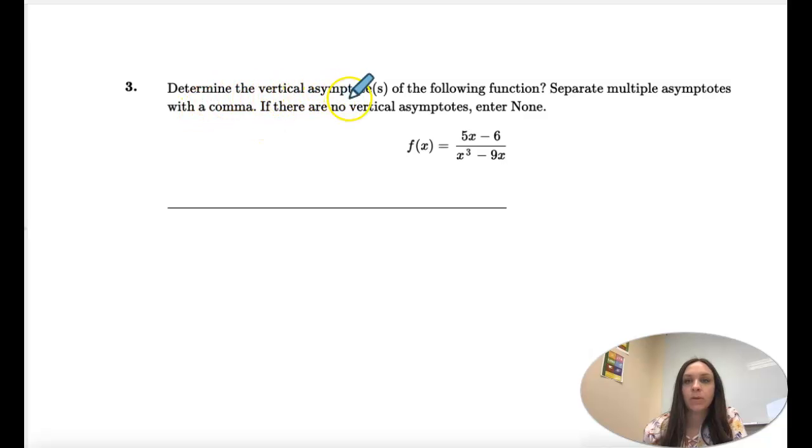Number three, we're determining the vertical asymptotes of a function, and we're going to separate multiple with a comma. If there's none, we'll enter none.